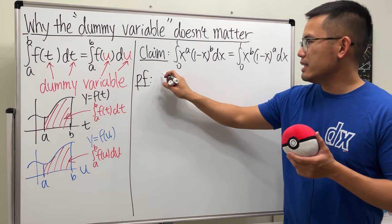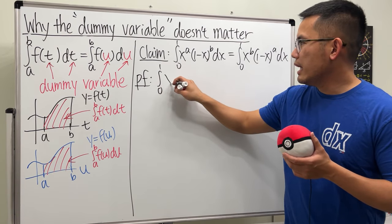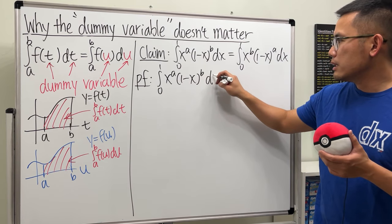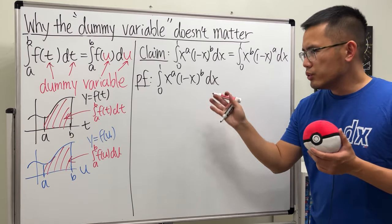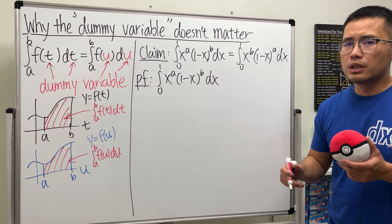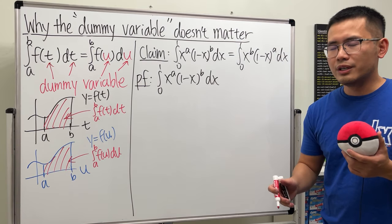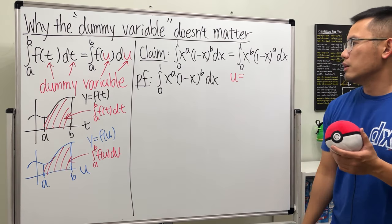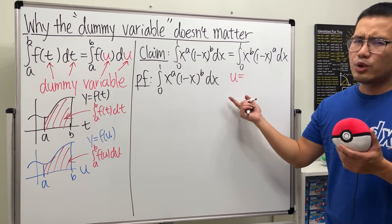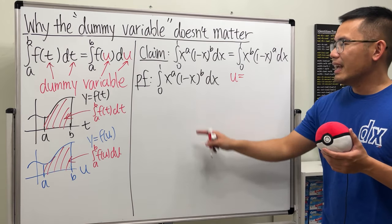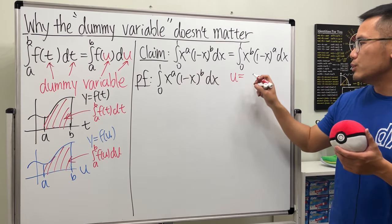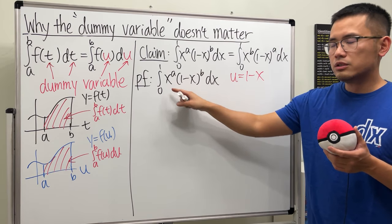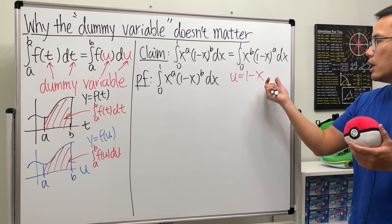Let's write the proof. Starting from the left-hand side: the integral from zero to one of x to the a times (1 minus x) to the b dx. For this kind of integral property proof, we usually just need a substitution. Let u be our variable — the new dummy variable — and let u equal 1 minus x.